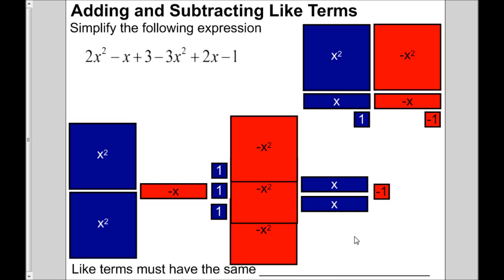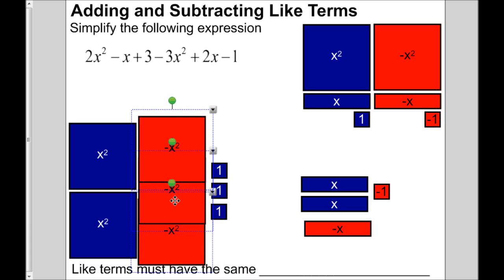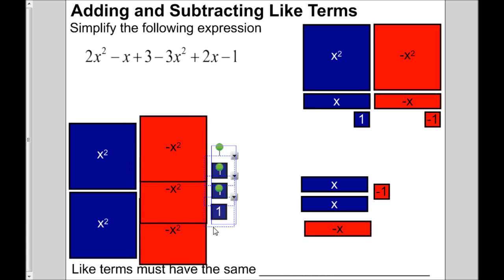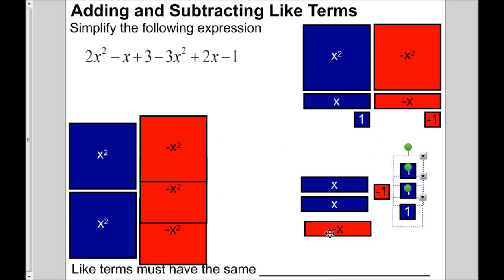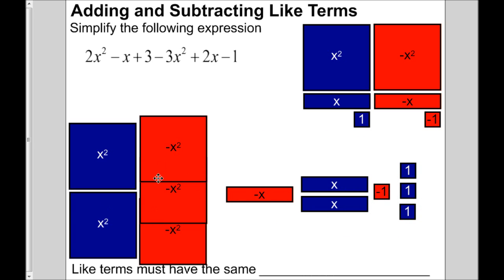Now it makes sense to rearrange the tiles according to their shapes. I'm going to put the big squares together, the rectangles together, and the little squares together. So these two blue squares represent 2x squared. The three red squares here represent negative 3x squared. And we've got minus x plus 2x, and then minus 1 and plus 3.